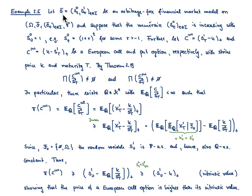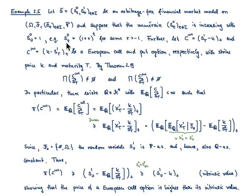I would like to consider a financial market model consisting of one risk-free security and one risky security, and I would like to assume that this financial market model is arbitrage-free. Moreover, I suppose that the numeraire, so this component S⁰_t, is increasing in time and starts at one. For instance, you can choose S⁰(t) to be deterministic and given by the value (1+r)^t for some r greater than minus one.